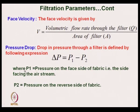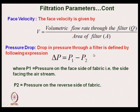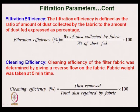Face velocity is given by the volumetric flow rate through the filter, Q, divided by the area of the filter A. Pressure drop across the filter fabric is defined as P1 minus P2, where P1 is the pressure on the face side and P2 is the pressure on the reverse side.